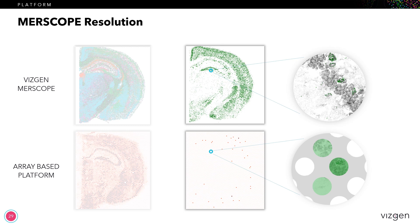What's also striking, I think, is all of the dead area outside the spots, where there's absolutely no information at all. So the key takeaway here is that the ability to get to at least single-cell information and to capture the information in that cell is of critical importance.